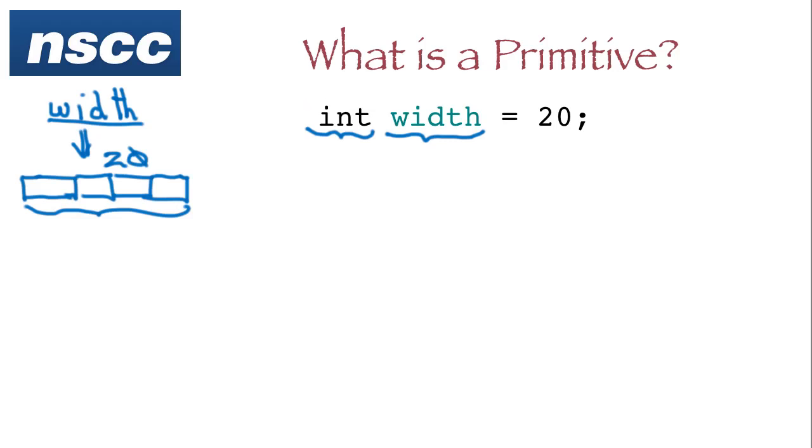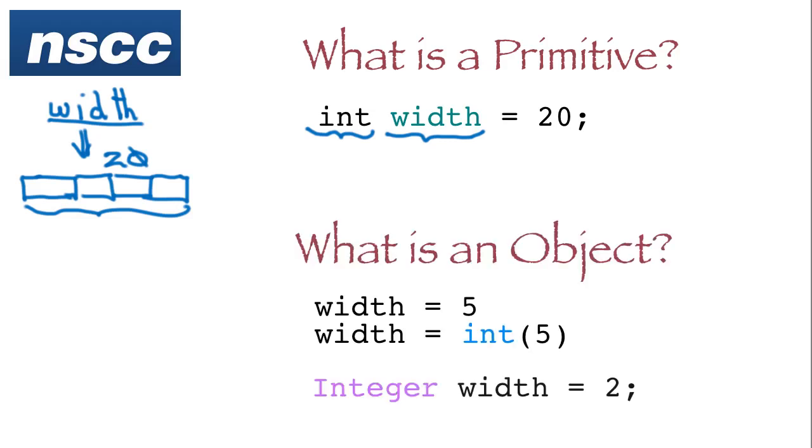Now let's contrast that against how we stored integers in Python. So here's the traditional approach in Python. And we could create an integer in two different ways: width equals 5 or width equals int(5). So let's look at this construct here. Because the compiler does the same thing.